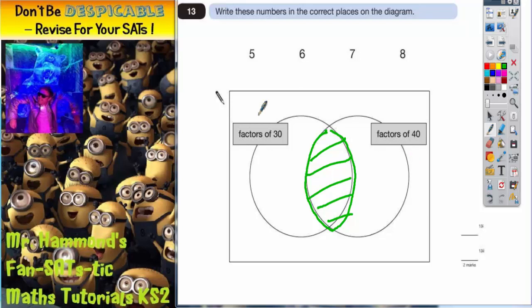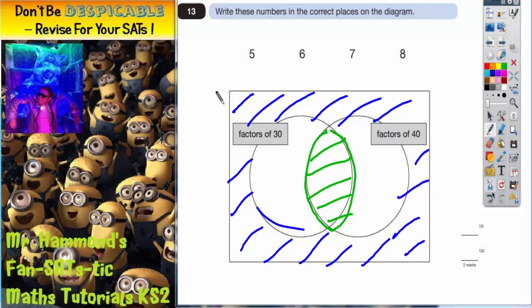A lot of people often forget about the rectangle on the outside of the Venn diagram which I'm currently shading in blue. Any numbers which don't fit into either circle so which aren't factors of 30 and aren't factors of 40 either will go in the rectangle on the outside so that's important to remember.